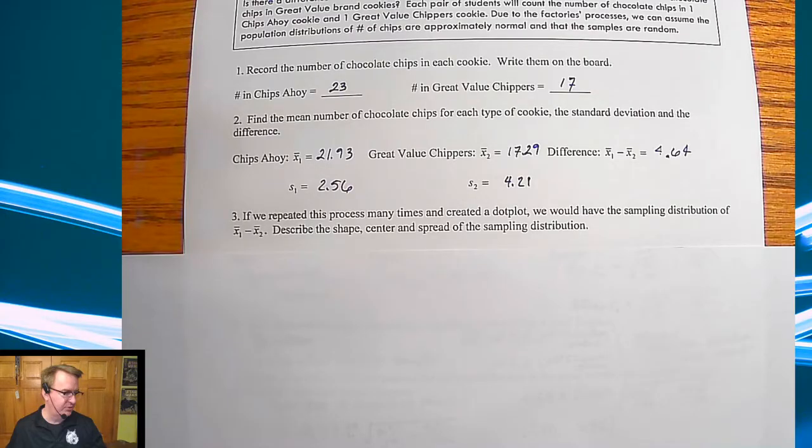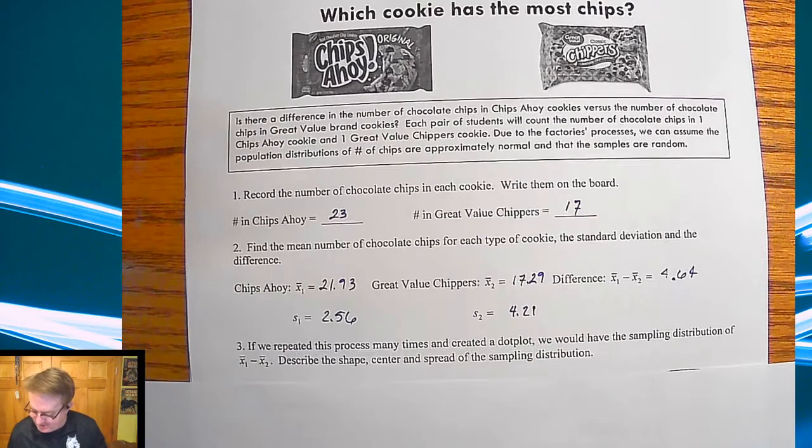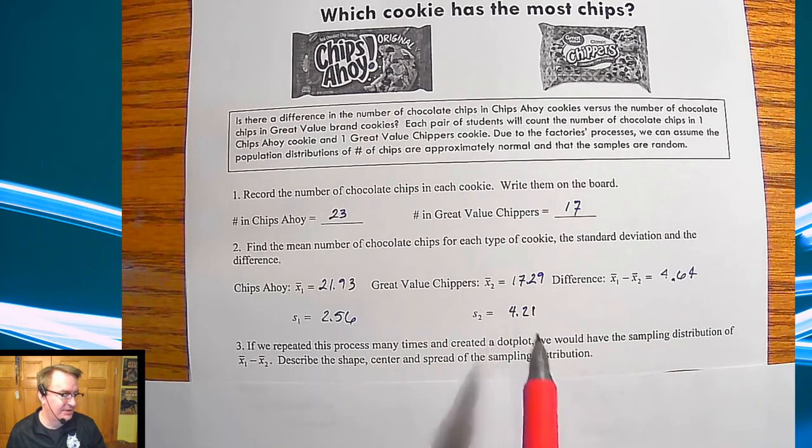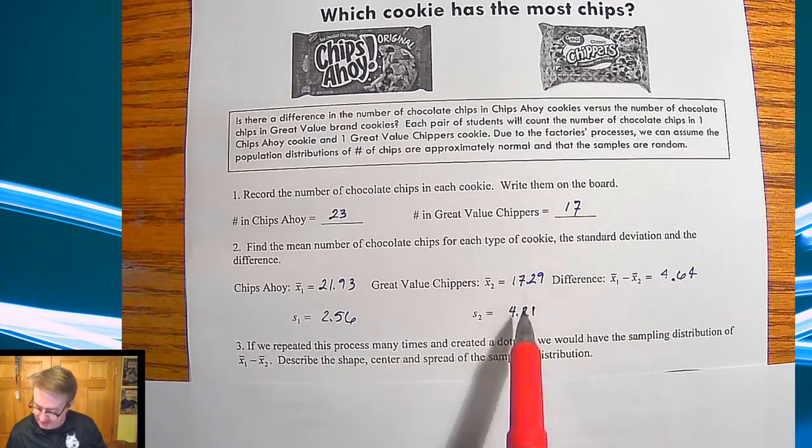So from there, what we're going to end up doing here is that, so we made a dot plot, et cetera, et cetera, sampling distribution of the difference of the two means. And we're going to describe the shape, the center, and the spread. Why? Because it's a good review. It's what we do. So anyway, so here are the numbers that I have there. So again, means and standard deviations for each.